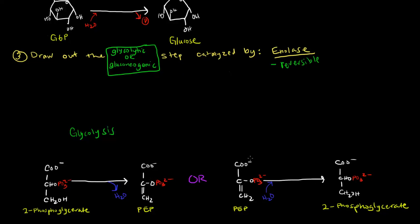But if I'm going from phosphoenolpyruvate to 2-phosphoglycerate, then that's the gluconeogenesis reaction, going the other way. So if you're told to write the step catalyzed by a particular enzyme that you know is reversible, then you have to know whether you're asked to draw the glycolytic or gluconeogenic step.